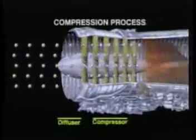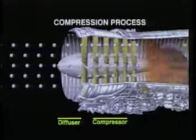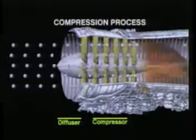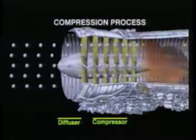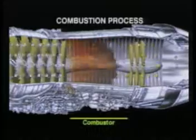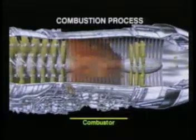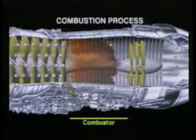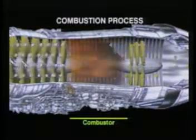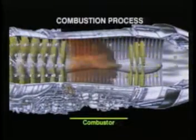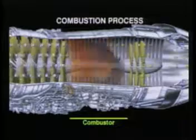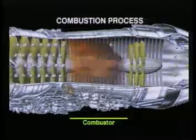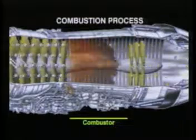Air entering the engine is slowed and compressed by the diffuser and compressor. In the combustor section, fuel is added to the air and burned. This raises the air's temperature and pressure.